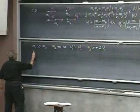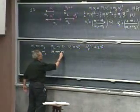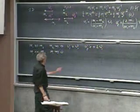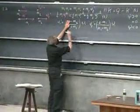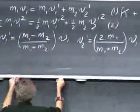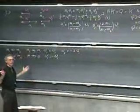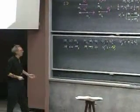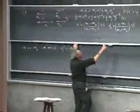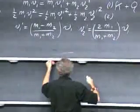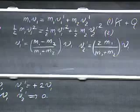Now let's take the case where M1 is much less than M2 — in the limiting case, M1 goes to zero. Substituting that in, M1 goes to zero, so V1 prime equals minus V1. Completely obvious: the ping-pong ball bounces off the bowling ball and comes right back. And the bowling ball doesn't do anything because M1 goes to zero, so V2 prime goes to zero. Very intuitive.